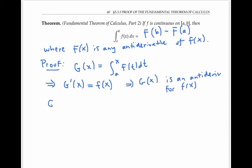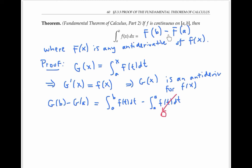Now, g of b minus g of a is, by definition, the integral from a to b of f of t dt minus the integral from a to a of f of t dt. This second integral is zero, since the bounds of integration are identical. So part two of the fundamental theorem of calculus is true if I use the antiderivative capital G.